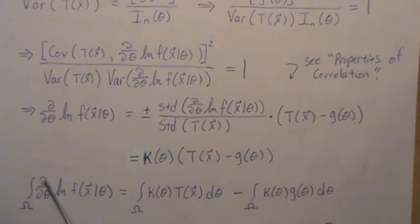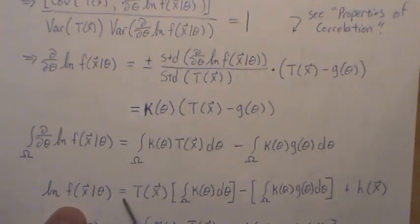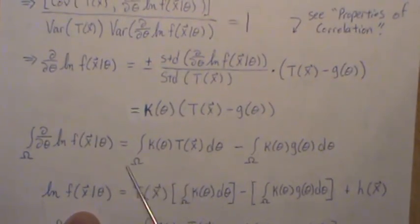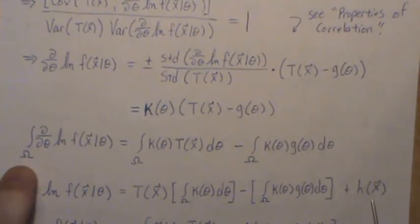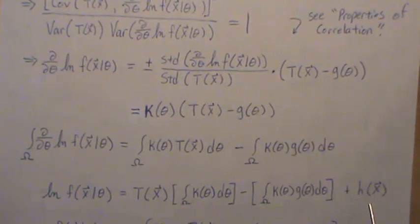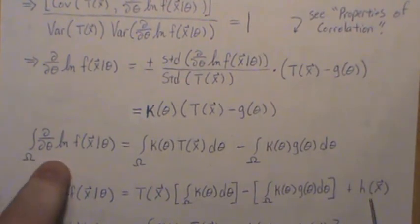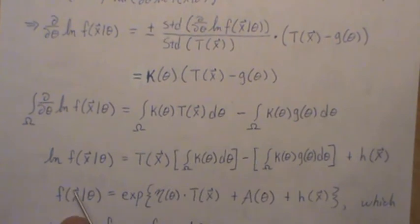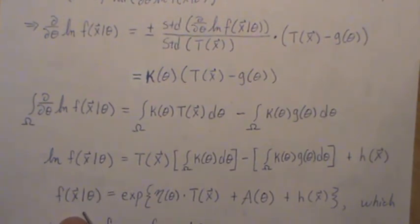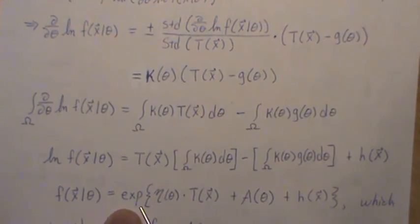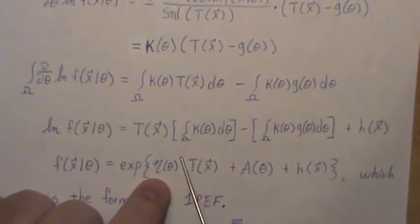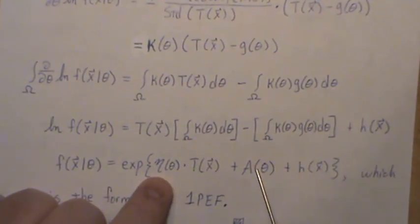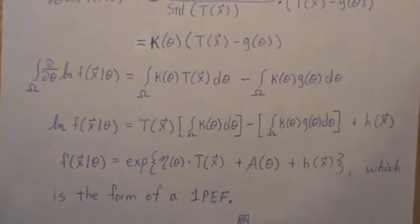Nothing new here, but the integral of the derivative goes away. T of X is constant in regards to theta, so it comes out of the integral. Don't forget the plus C — the constant — so it's a function of only the x's, constant in regards to theta. Now let's exponentiate both sides: this becomes F of X, and it's e raised to this power. Calling this eta of theta and this A of theta and the constant H of x, this is the form of a one-parameter exponential family.